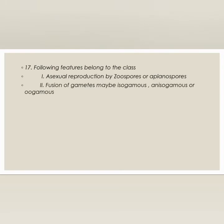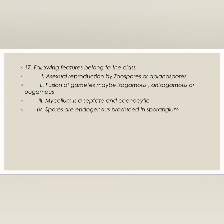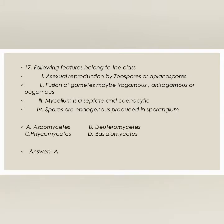Next question: the following features belong to which class — asexual reproduction by zoospores or aplanospores, fusion of gametes may be isogametes or anisogametes, mycelium is aseptate and coenocytic, spores are endogenously produced in sporangium? The correct answer is Phycomycetes; all these characters belong to the class Phycomycetes.